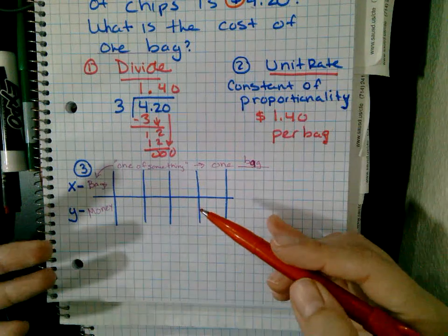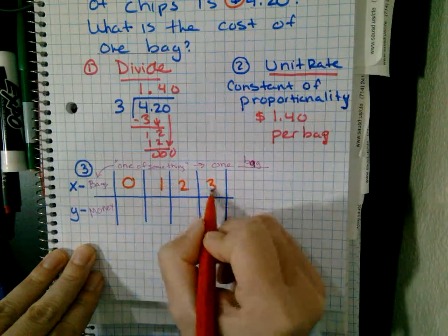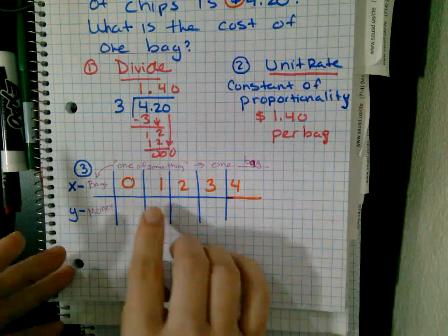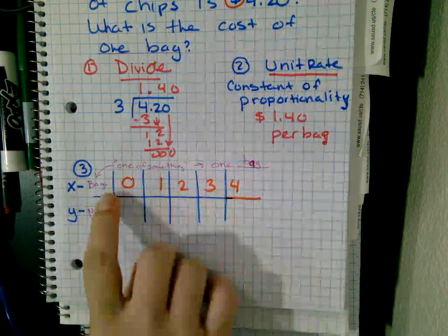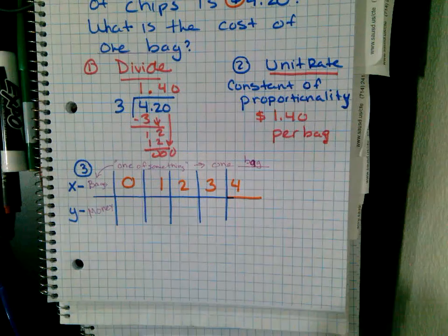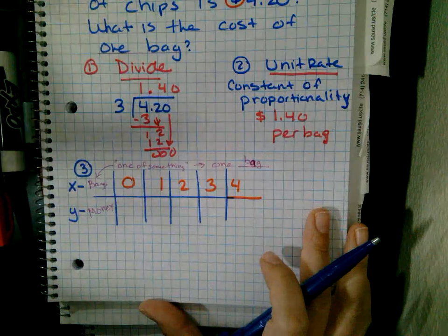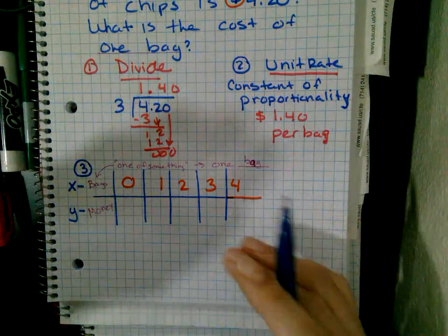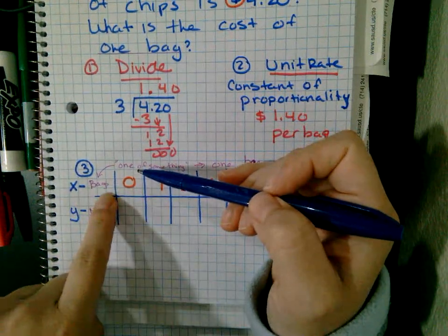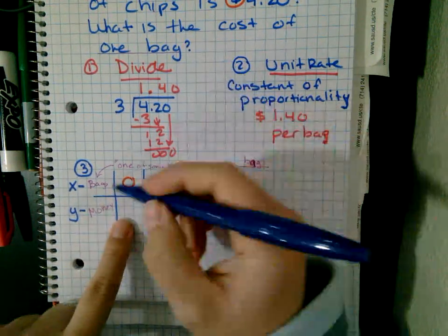Do yourself a favor and always label x as zero, one, two, three, four. Always start with those numbers — trust me. Now I'm going to ask you the hardest question of the day: if I bought zero bags of chips, how much did I spend? Zero.